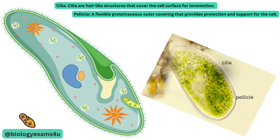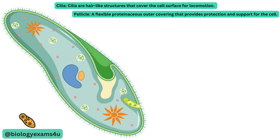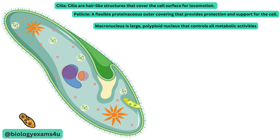Paramecia have two types of nuclei: a macronucleus and a micronucleus. The macronucleus is a large, polyploid nucleus that controls all metabolic activities.